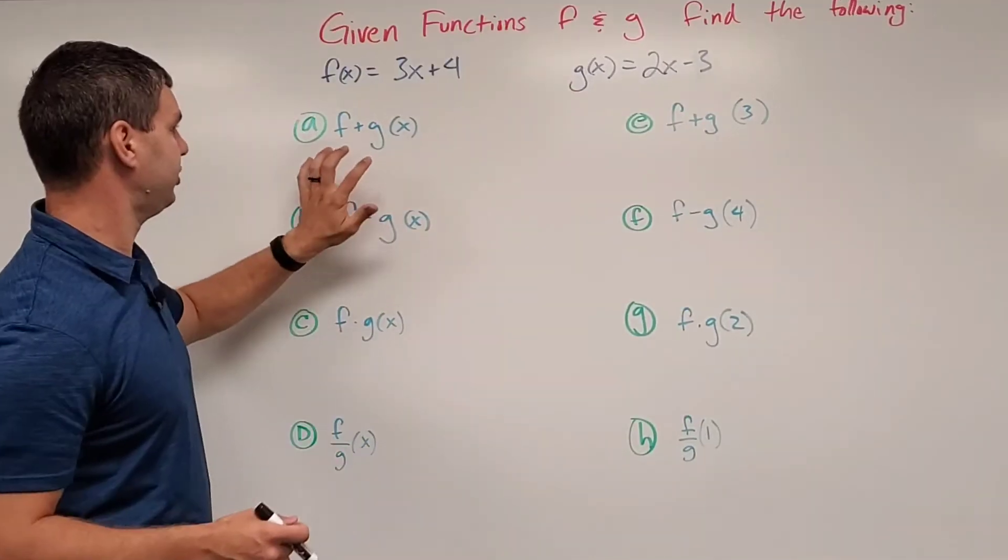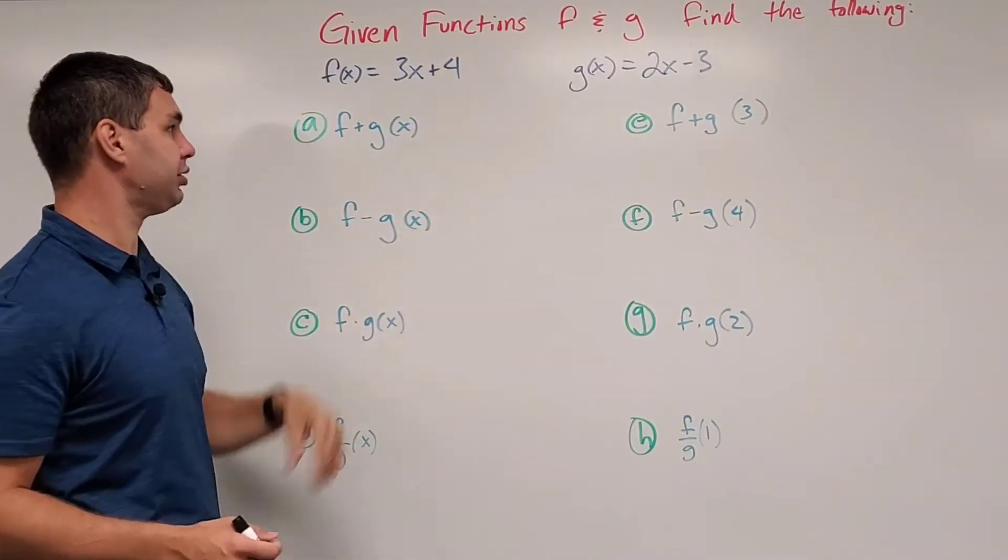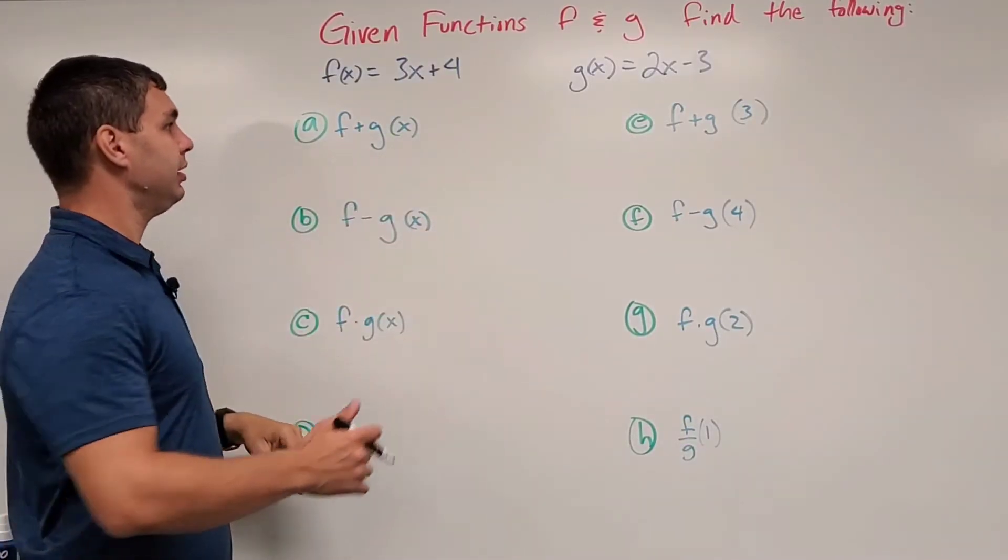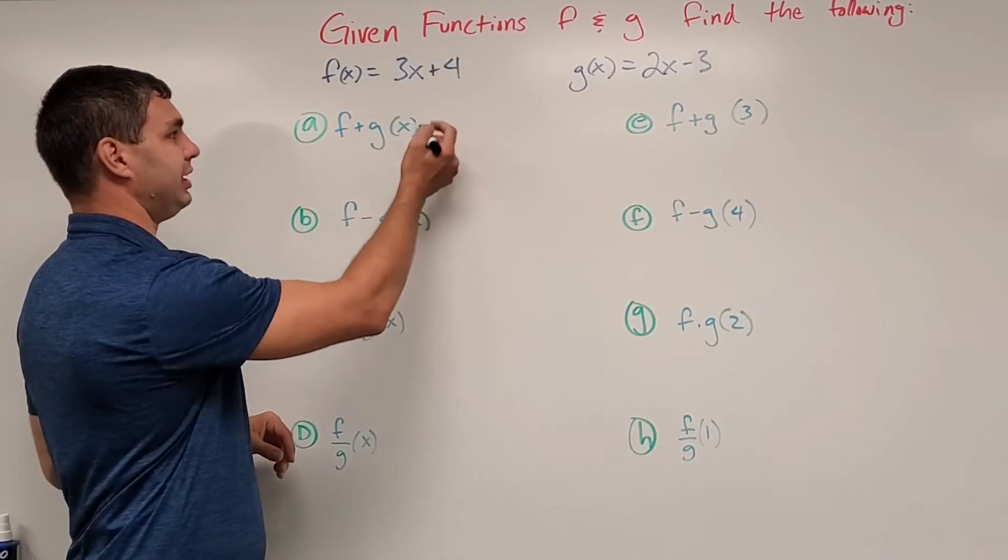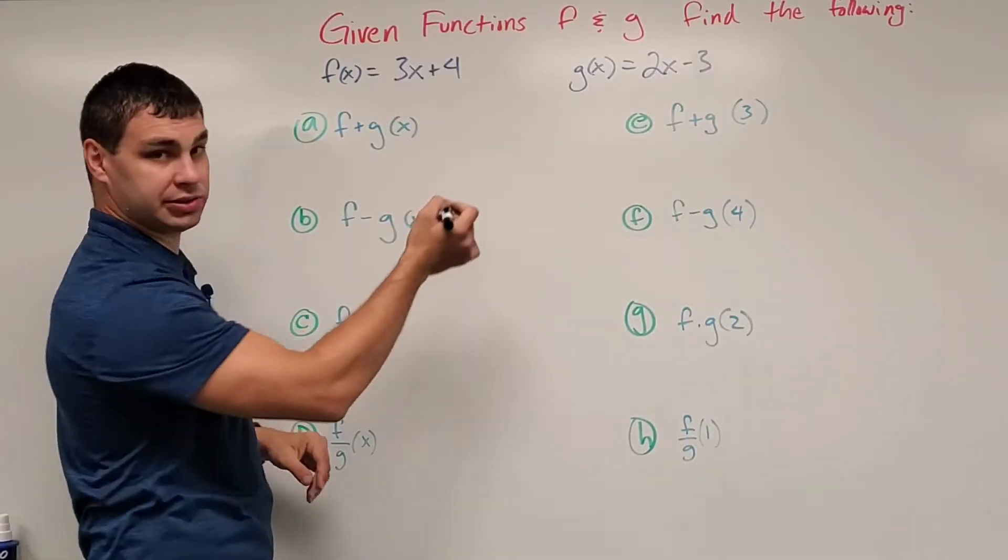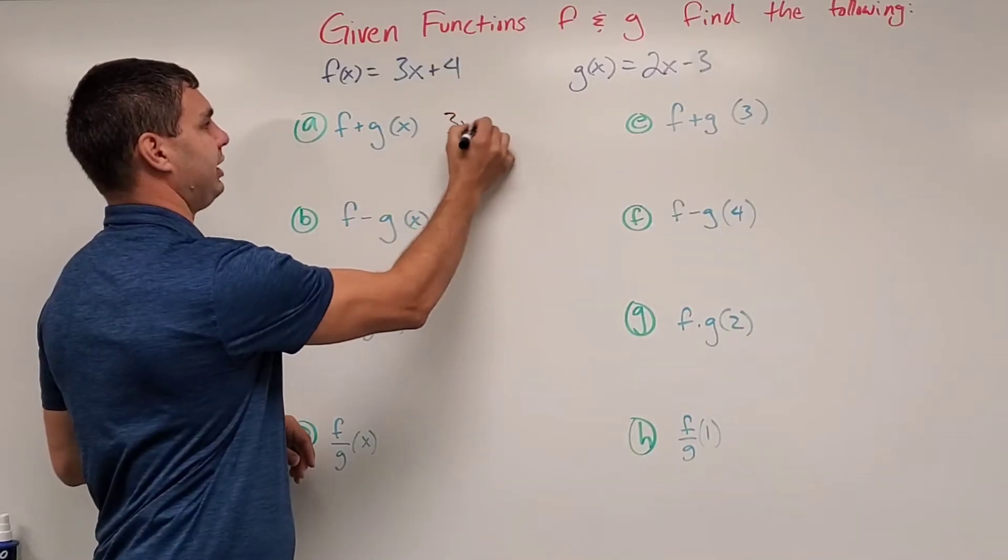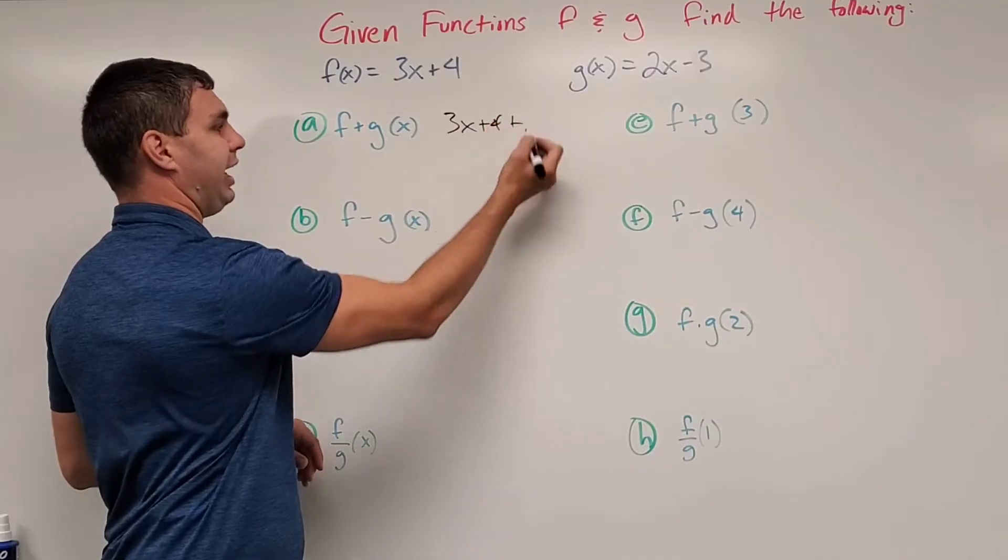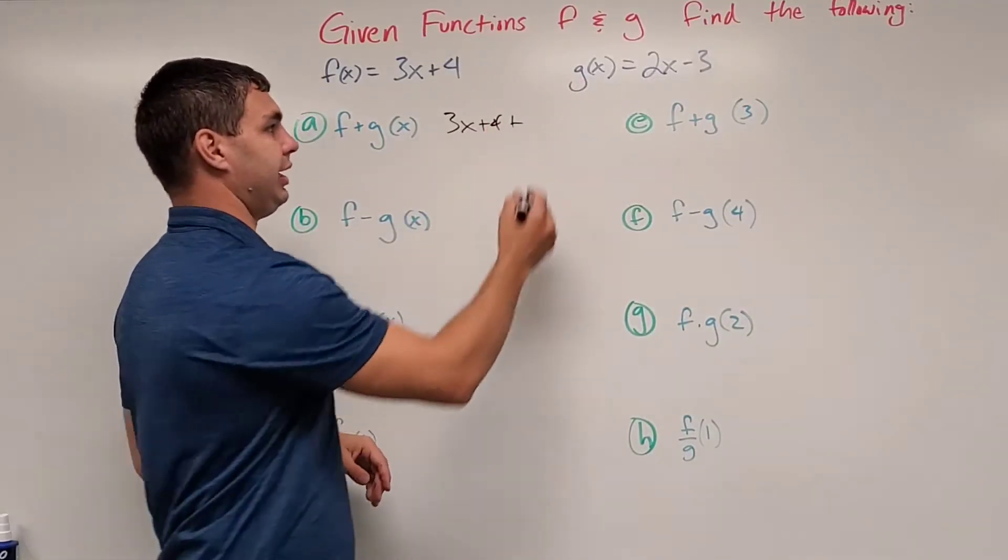and for g of x is 2x minus 3. Alright, so our first one, we have eight of these, our first one is f plus g of x. And so what I'm going to have to do is take my f of x, I'll write this out for this first one, is 3x plus 4 and then just add it to the other one, 2x minus 3.